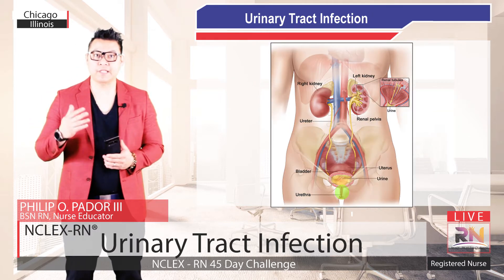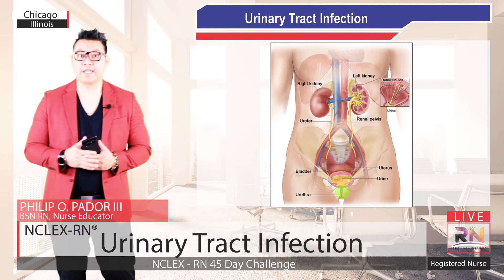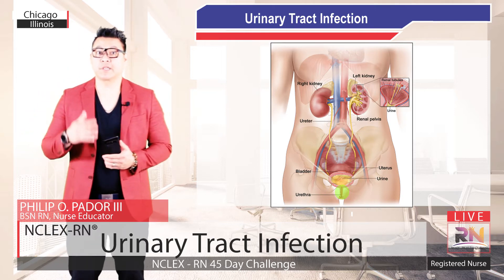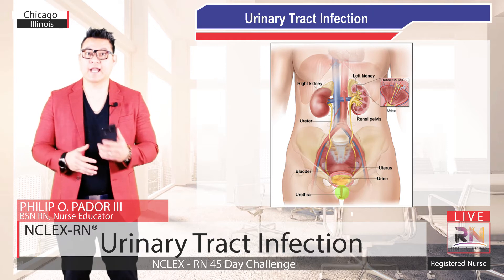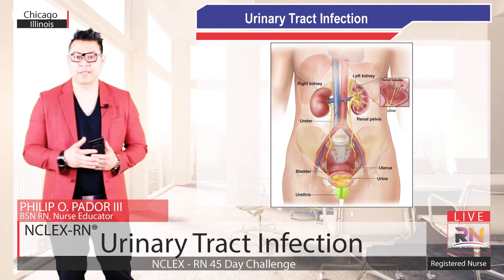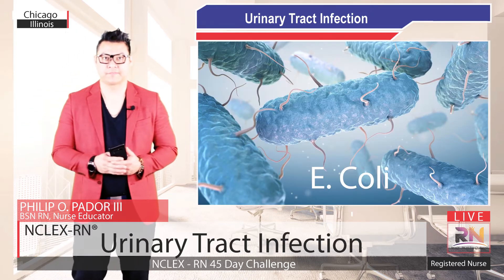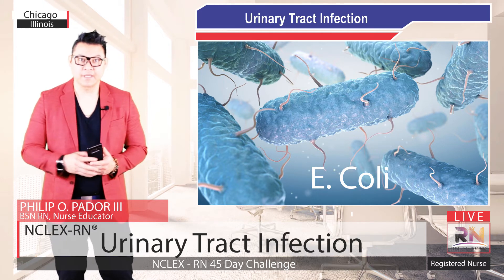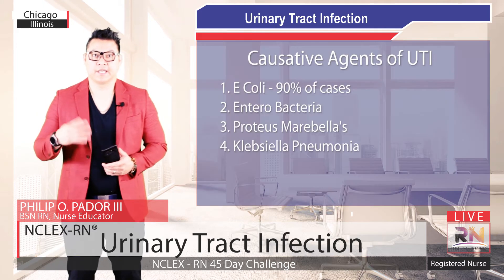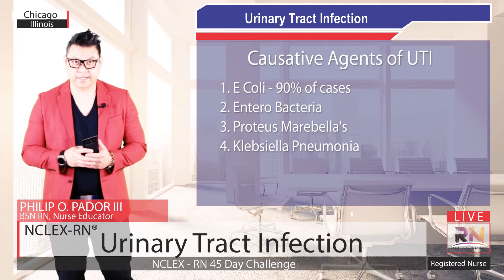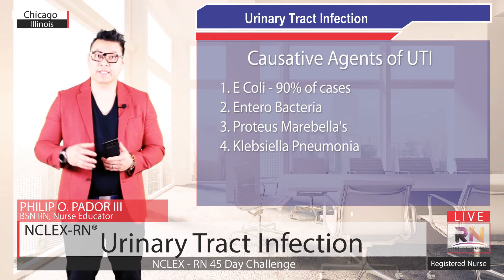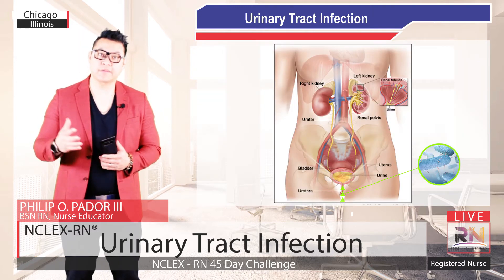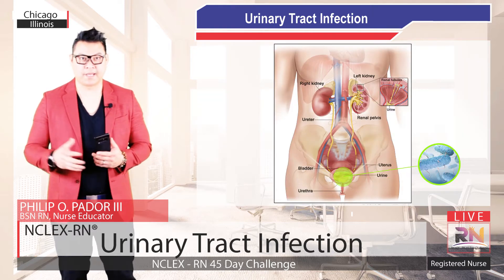The female anatomy is very similar, except importantly, they have a shorter urethra. With the shorter urethra, they have an increased risk of developing urinary tract infections. Causative agents of UTI are mainly E. coli, accounting for 90% of cases. Others include enterobacteria, Proteus mirabilis, and Klebsiella pneumoniae. They essentially enter the urethra and colonize the area or the bladder.